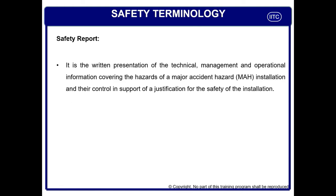A safety report is a very essential element for any dangerous operation or activity. It is a written presentation of technical management and operational information covering the hazards of a major accident installation and their control, in support of justification of the safety of the installation. This is the legal definition of a safety report, and it must have written documentation for all aspects of the dangerous activity — what if something goes wrong, how to control it, and what is the justification for continued operation.